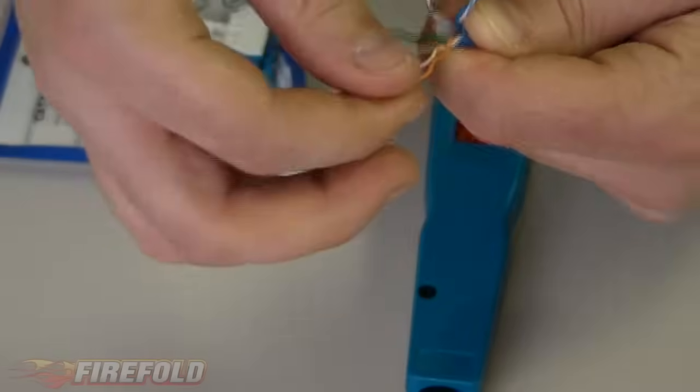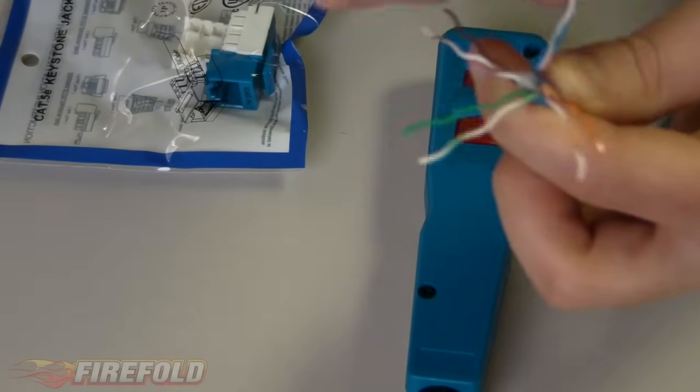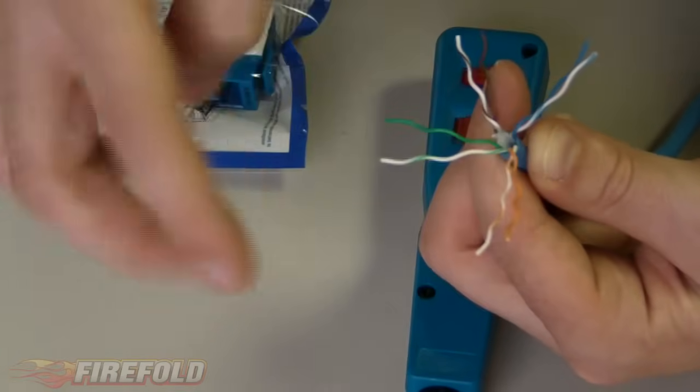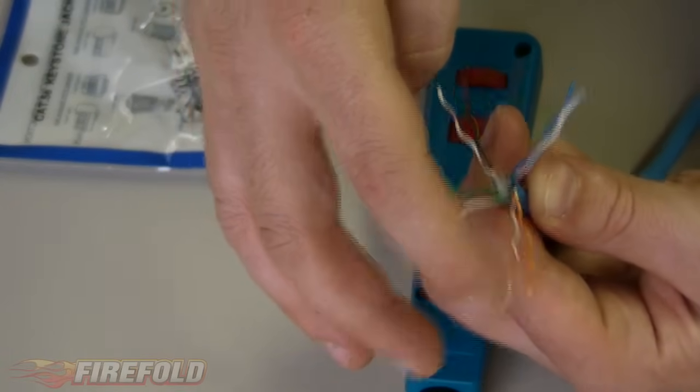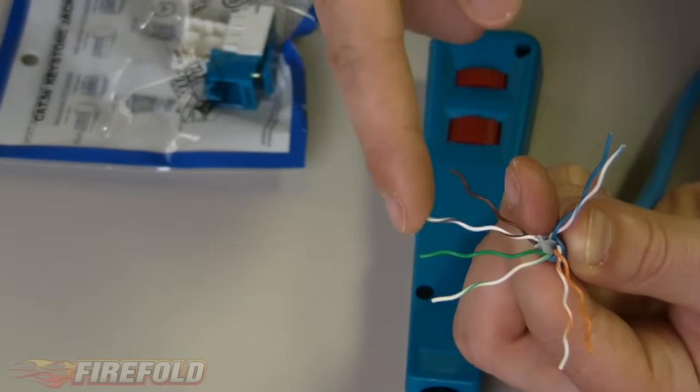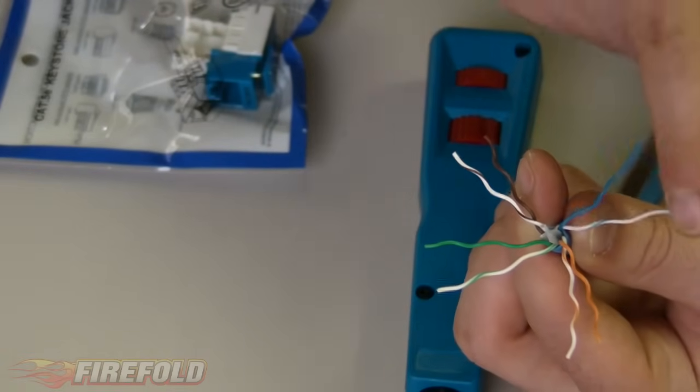And now, we have four separate pairs of wires. We have our solid orange, our white with orange stripe, white with green stripe, solid green, white with brown, solid brown, white with blue, and solid blue.